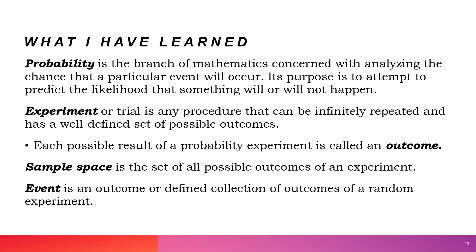Let's review what we learned today. Probability is a branch of mathematics concerned with analyzing the chance that a particular event will occur, and its purpose is to attempt to predict the likelihood that something will or will not happen. An experiment or trial is any procedure that can be repeated and has a well-defined set of possible outcomes. The possible result of an experiment is called an outcome. Sample space is the set of all possible outcomes of an experiment. An event is an outcome or defined collection of outcomes of a random experiment.